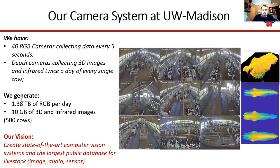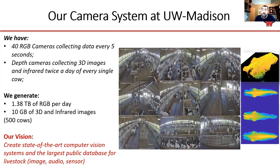At our UW farm, we have 40 RGB cameras generating data every five seconds and depth cameras collecting images for every single cow. Compared to other domains we don't generate massive datasets, but in animal science this is hard to handle. We are storing data with the vision of building an important computer vision system for livestock and possibly a larger public database of image, audio, and other sensing data that the community could benefit from.